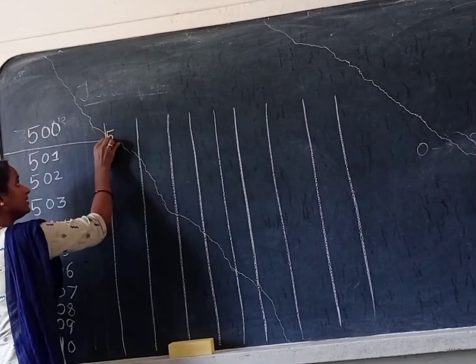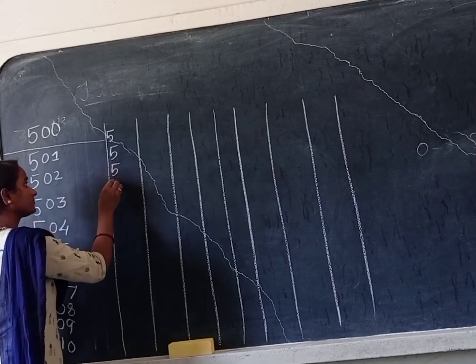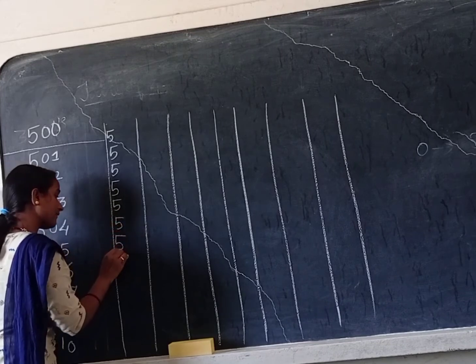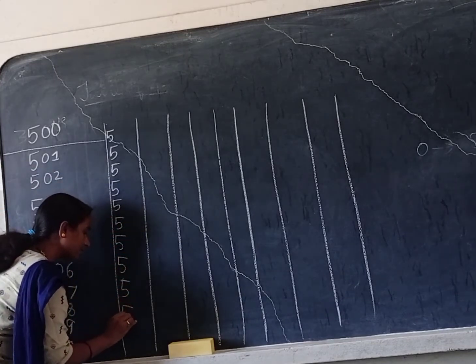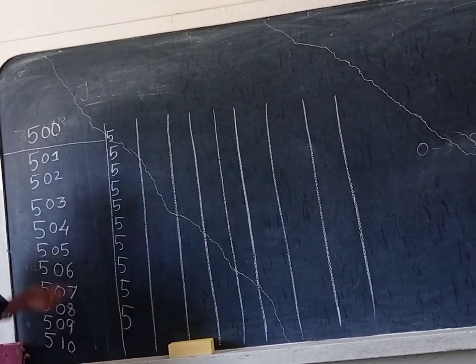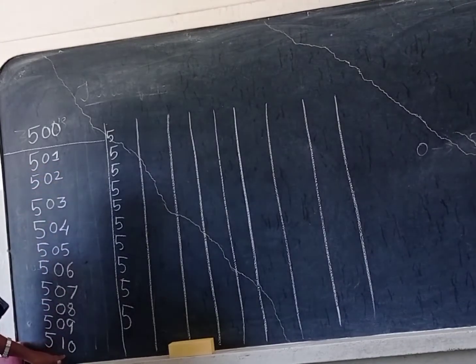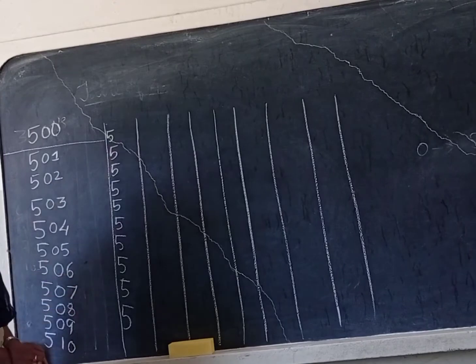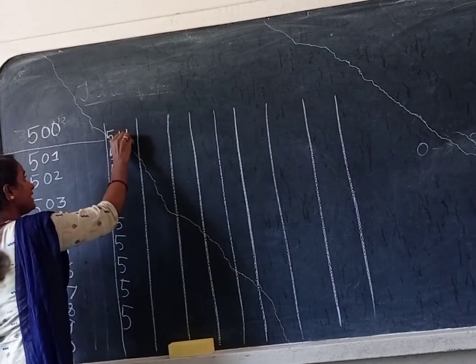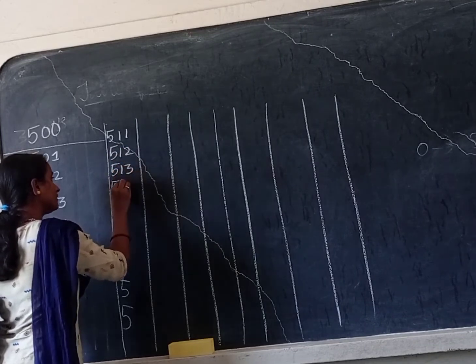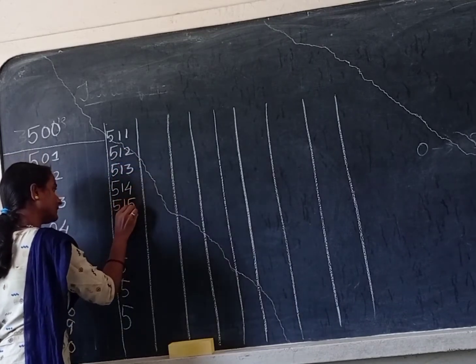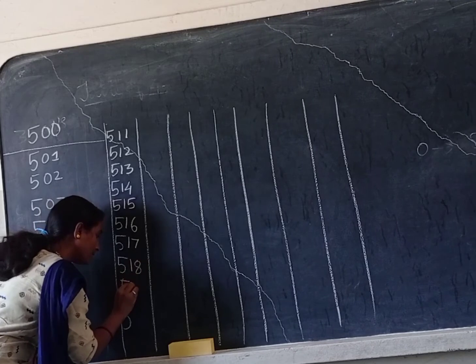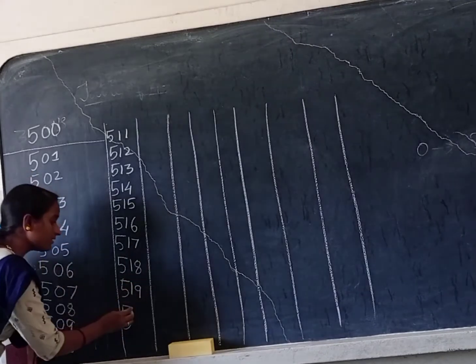Now again I write ten times: 1, 2, 3, 4, 5, 6, 7, 8, 9, 10. Here I start with 0 to 1, that is 1 to 9, till 10. Now I will continue after 10. Which number will come children? 11. So: 511, 512, 513, 514, 515, 516, 517, 518, 519.